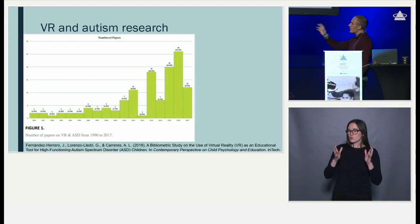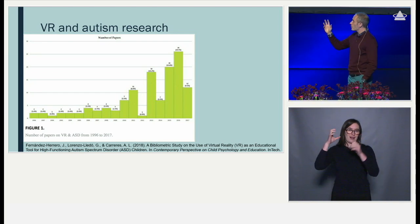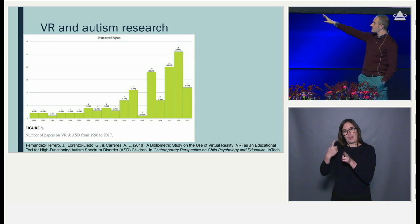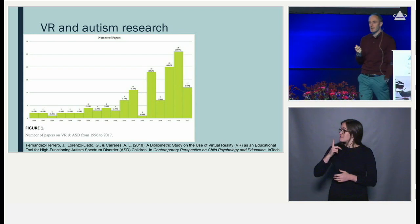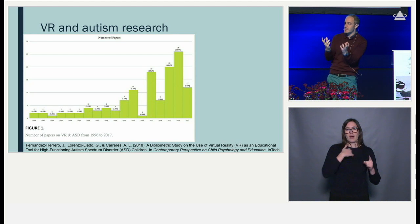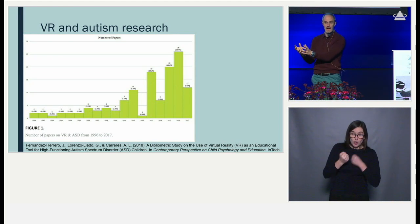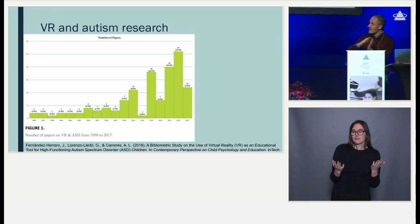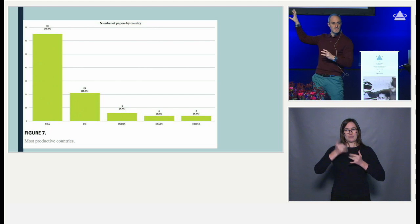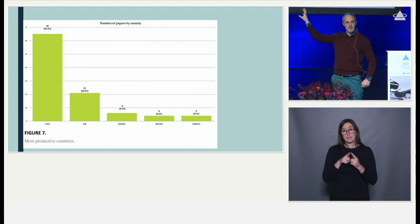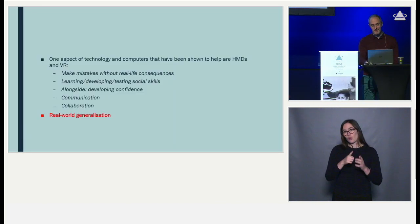When we look at the actual evidence to support the use of virtual reality with autistic people, the evidence base is slowly but surely growing since the 1960s through to 2017. As teachers and educators, we often look to the evidence base in terms of what we should be doing. That growing evidence is mainly situated within a UK and US context primarily.